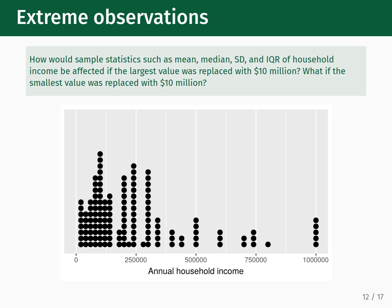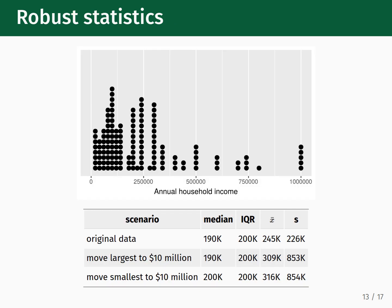Now that we have a few different statistical measures for our data distributions, how are sample statistics such as the mean, median, standard deviation, and the interquartile range affected by extreme observations in the data set? To illustrate this, consider the following examples shown in the dot plot below. The dot plot shows the distribution of a sample of annual household incomes. We could compute the mean, median, standard deviation, and IQR for this distribution. Now let's ask what would happen to the mean, median, standard deviation, and IQR if we replaced the largest value in the data set with a value of $10 million. Similarly, what would happen to them if we instead replaced the smallest value in the data set with a value of $10 million? Here we show the results of those calculations. For the original data set, the median value is 190,000, and the IQR is 200,000. The mean value is 245,000, and the standard deviation is 226,000.